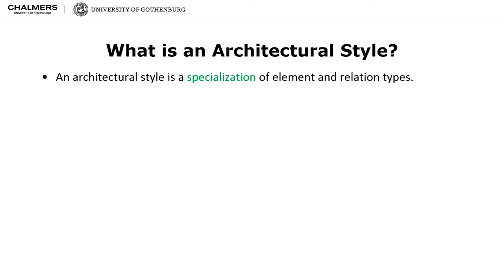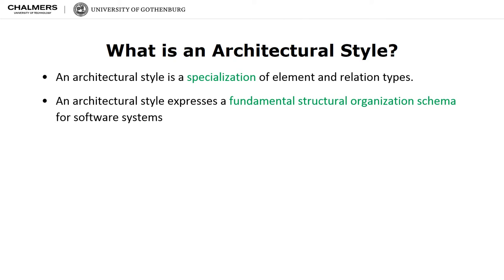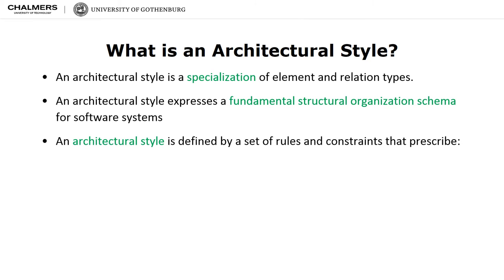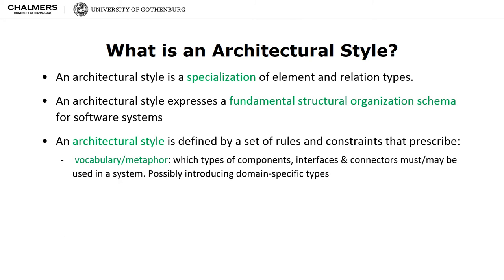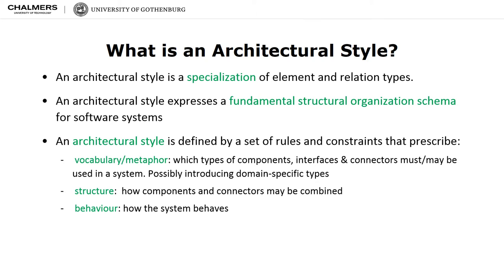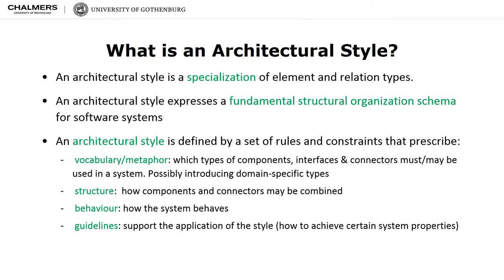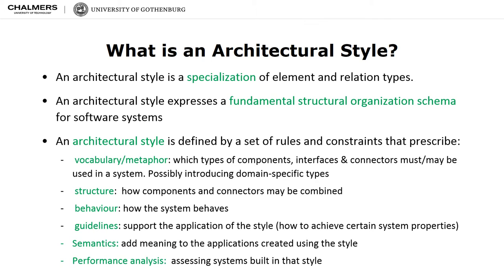In software design, an architectural style is a specialization of element and relation types, together with a set of constraints on how they can be used. An architectural style expresses a fundamental structural organization schema for software systems. It provides a set of predefined subsystems, specifies their responsibilities, and includes rules and guidelines for organizing the relationships between them. The set of rules and constraints provide a vocabulary or metaphor for component and connector types, define a set of topological constraints that determine the compositional rules of the elements, include information on how the system behaves, provide guidelines on how to apply the style, define semantics of the applications constructed using the style, and act as performance analysis tools of systems built in that style.